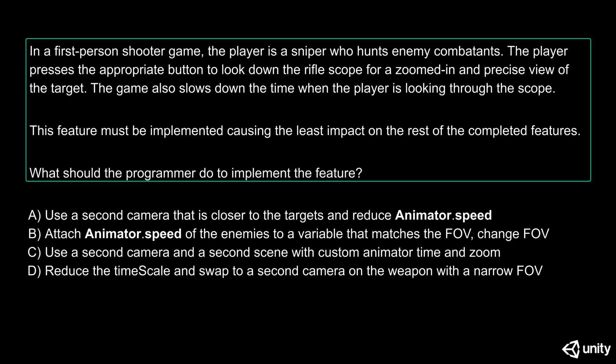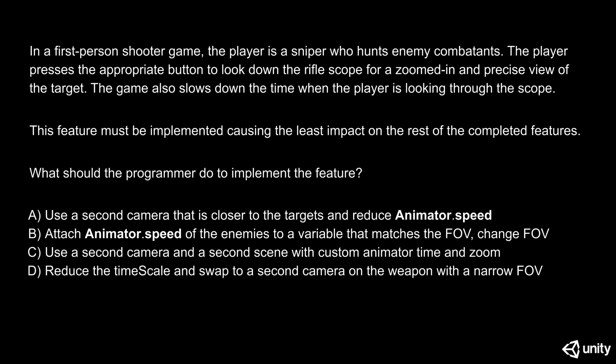My name is Ariel, and I'm going to help you go through this sample item that's similar to the items you will find in the test. The item reads as follows: in a first-person shooter game, the player is a sniper who hunts enemy combatants. The player presses the appropriate button to lock down the rifle scope in a zoomed in and precise view of the target. The game also slows down the time when the player is looking through the scope. This feature must be implemented causing the least impact on the rest of the completed features. What should the programmer do to implement this feature? Reading each of the answer options, we're going to figure out which one is the right one based on the scenario. The scenario contains enough information for you to make a clear-cut decision on which one is correct.